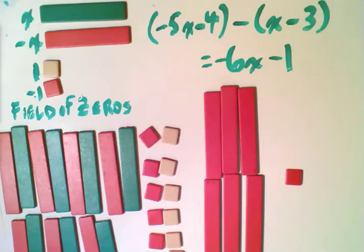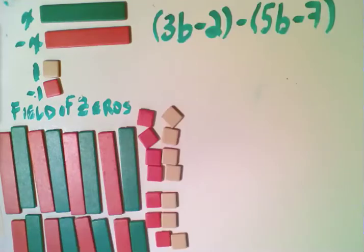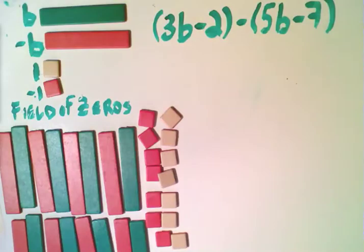So let's take a look at one last question here. Okay, in this last one we have 3b minus 2 subtract 5b minus 7. No x's here. So it actually doesn't have to be that the variable is an x. In this case the variable is a b. So these are not x tiles anymore. These are b tiles. So this is a positive b for the green one. And a negative b for the red long one.